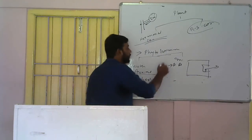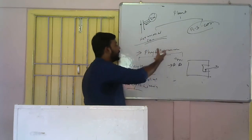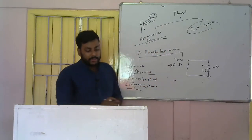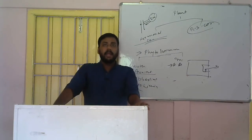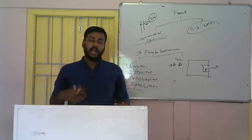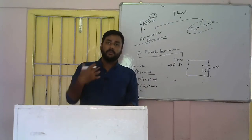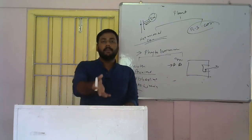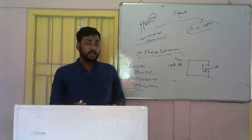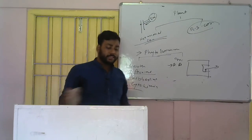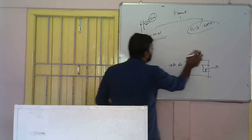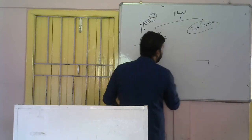The last plant hormone we will discuss is ethylene. Ethylene is a gaseous hormone and the main function of ethylene is to ripen the fruit. When fruits ripen, this is done by ethylene. It is the only gaseous hormone found in plants. So the hormonal coordination in plants is now complete.